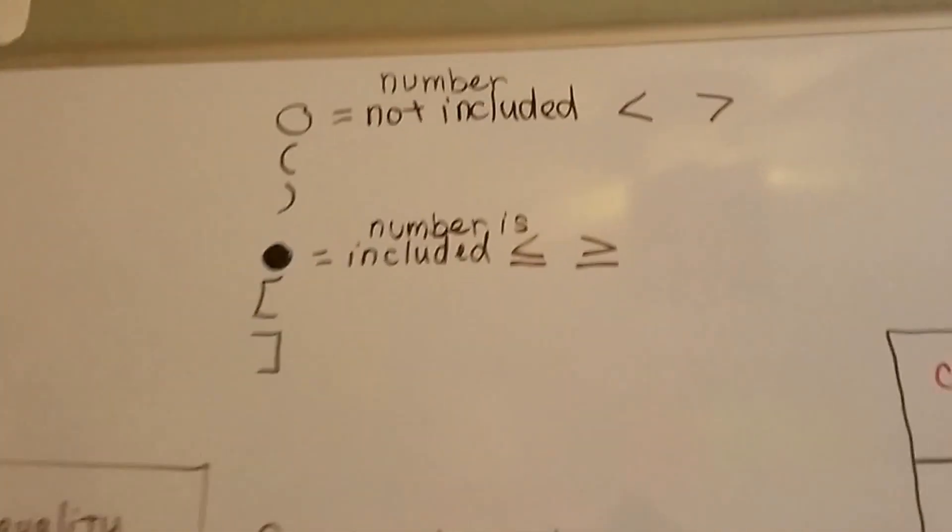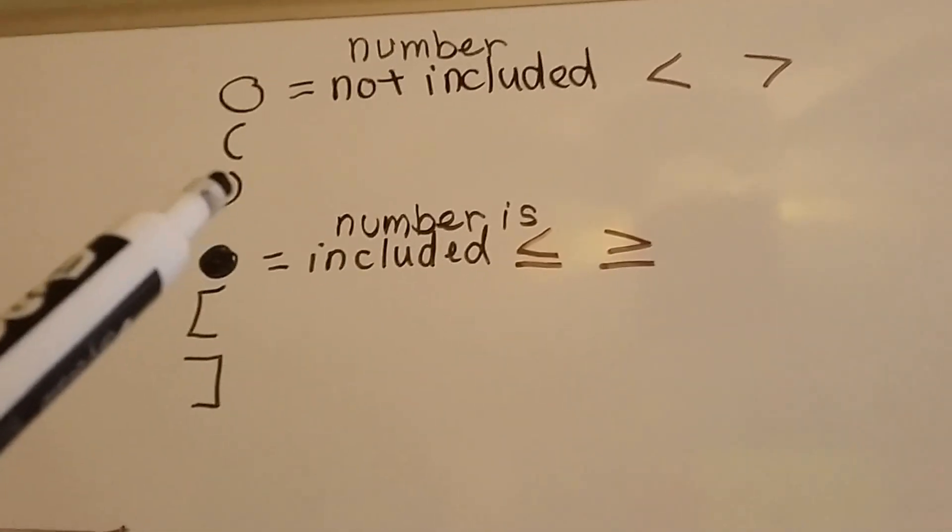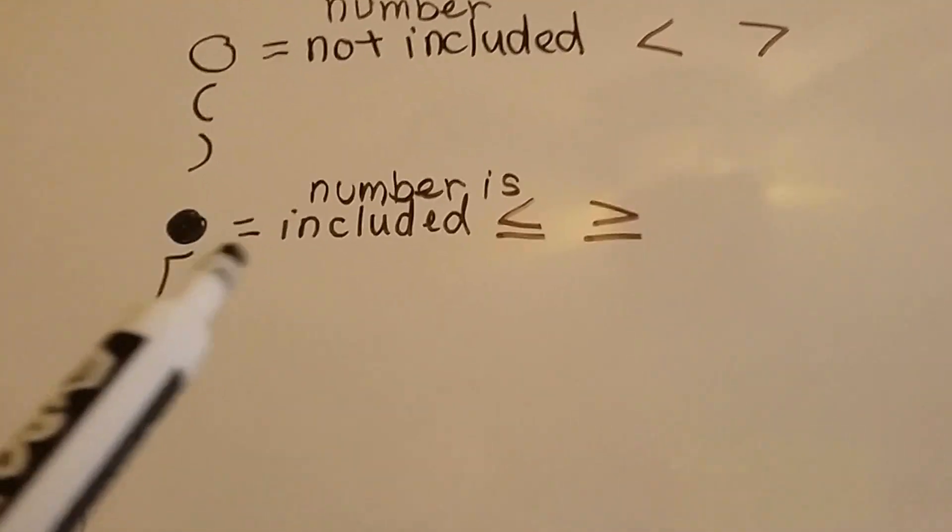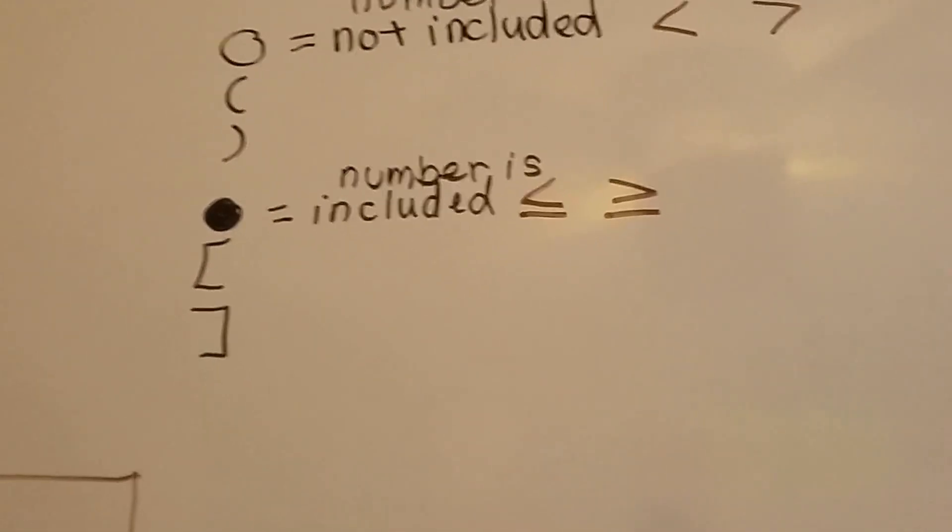So just remember, when the number's not included, we use the open circle, or as in Algebra 2 like I use, we use a parentheses. And if it is included, we use a closed dot, or in Algebra 2 we use the bracket.